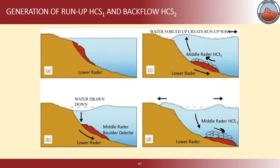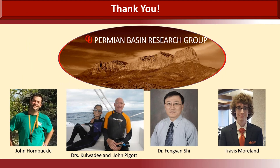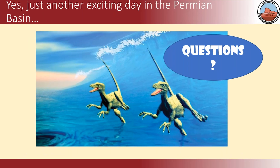Here again is the cartoon of what I showed earlier — how you can see stacked in D the hummocky cross-stratification cells. So, thank you. Are there any questions?